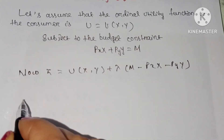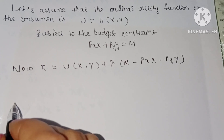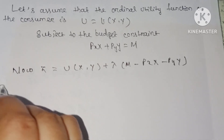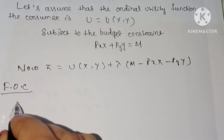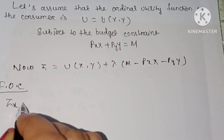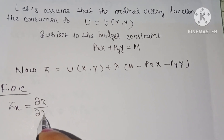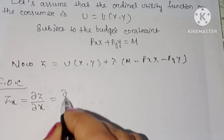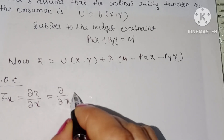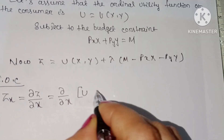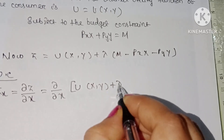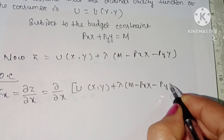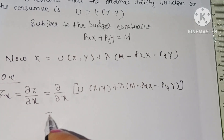Now, the first-order condition for the constrained maximization of the utility function. The first partial derivative of the composite function with respect to x, denoted z_x, equals ∂/∂x of [u(x, y) plus λ into (m minus px·x minus py·y)].